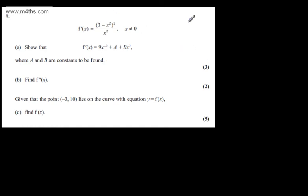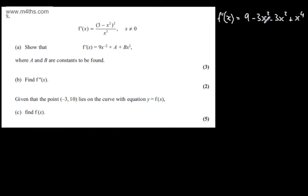I'm going to start by expanding the numerator. So we can write f'(x) equal to 9 minus 3x squared minus another 3x squared plus x to the power of 4, all over x squared. Tidying the numerator up, we have 9 minus 6x squared plus x to the 4th, all over x squared.